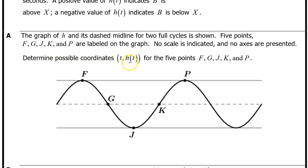Determine possible coordinates (t, h(t)) for the five points F, G, J, K, and P.